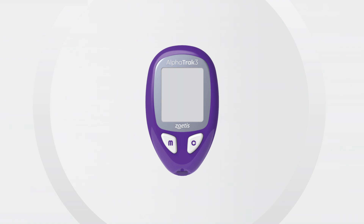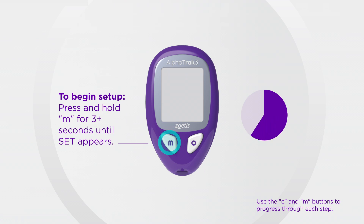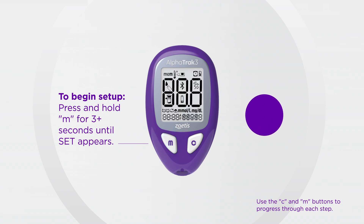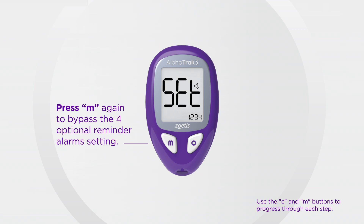With the meter off, press and hold M for more than 3 seconds until SET appears on the screen. Use the C and M buttons to progress through each step. For now, press M to bypass the 4 optional reminder alarm settings.